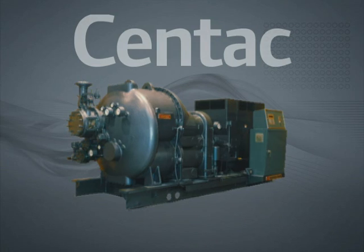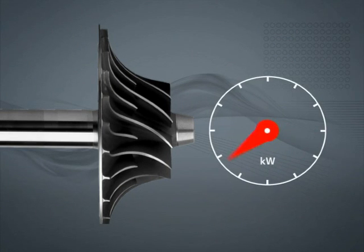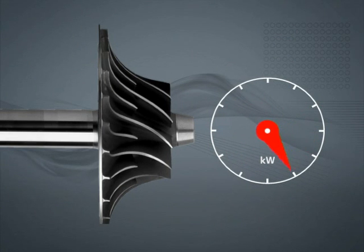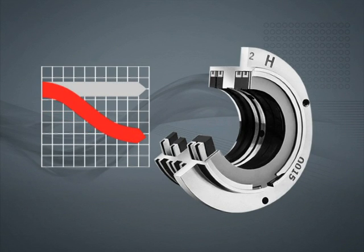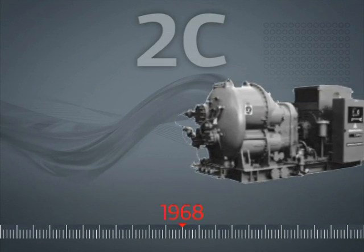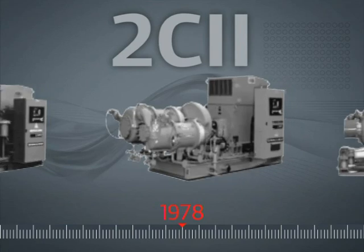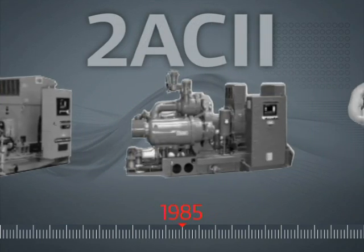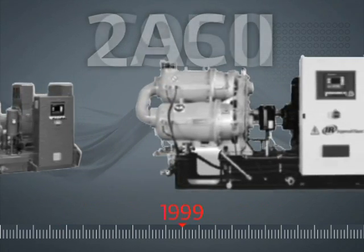Simplicity by design also spurred industry-changing innovations such as backward-leaning impeller vanes to improve operational range and efficiency, and carbon ring seal designs to minimize air loss. More than 40 years of simplicity by design have made Centac the most dependable, lowest operating cost centrifugal solution available, with more than 20,000 units installed worldwide.